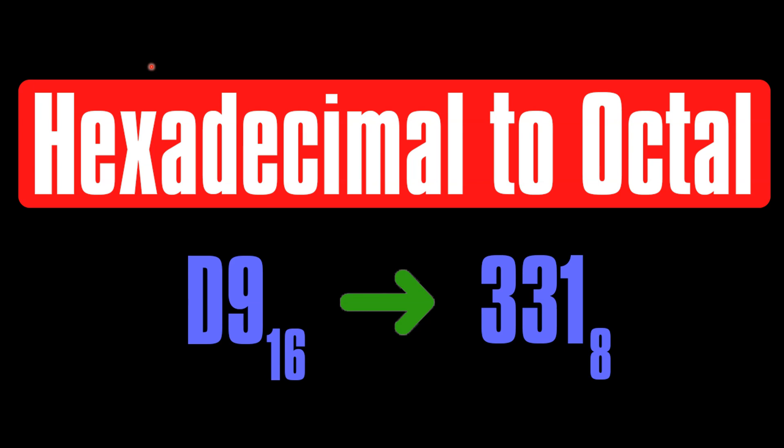In this video you're going to learn the easy way to convert hexadecimal numbers into octal numbers. Hexadecimal numbers are also known as base 16 numbers and octal numbers are also known as base 8 numbers.